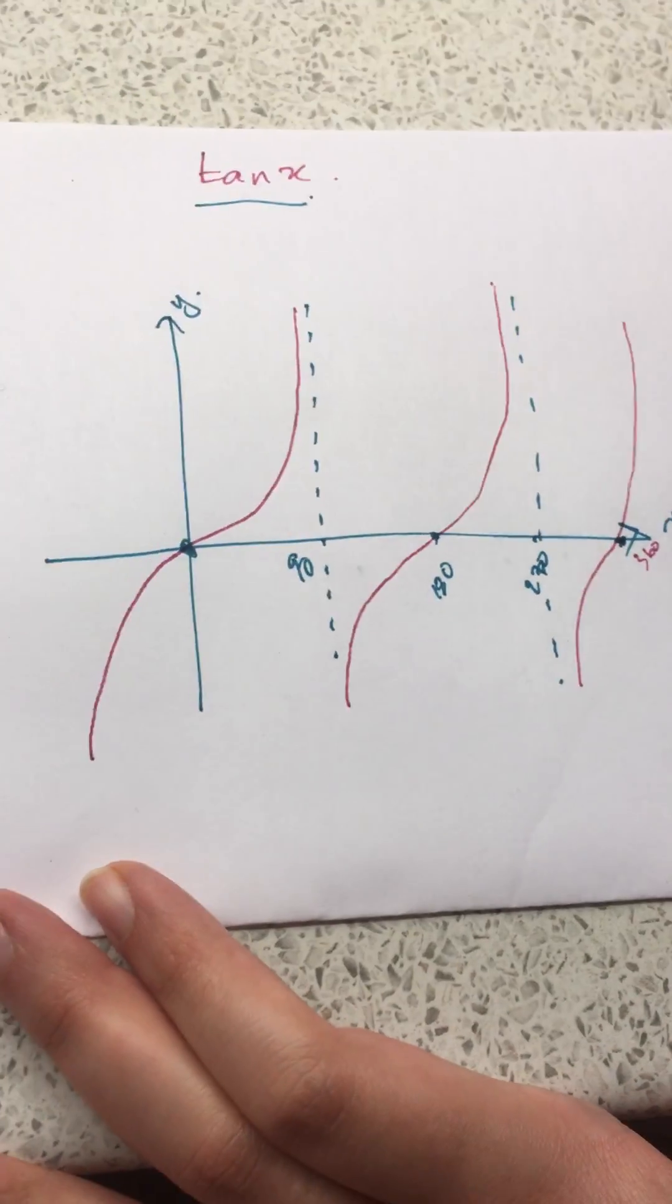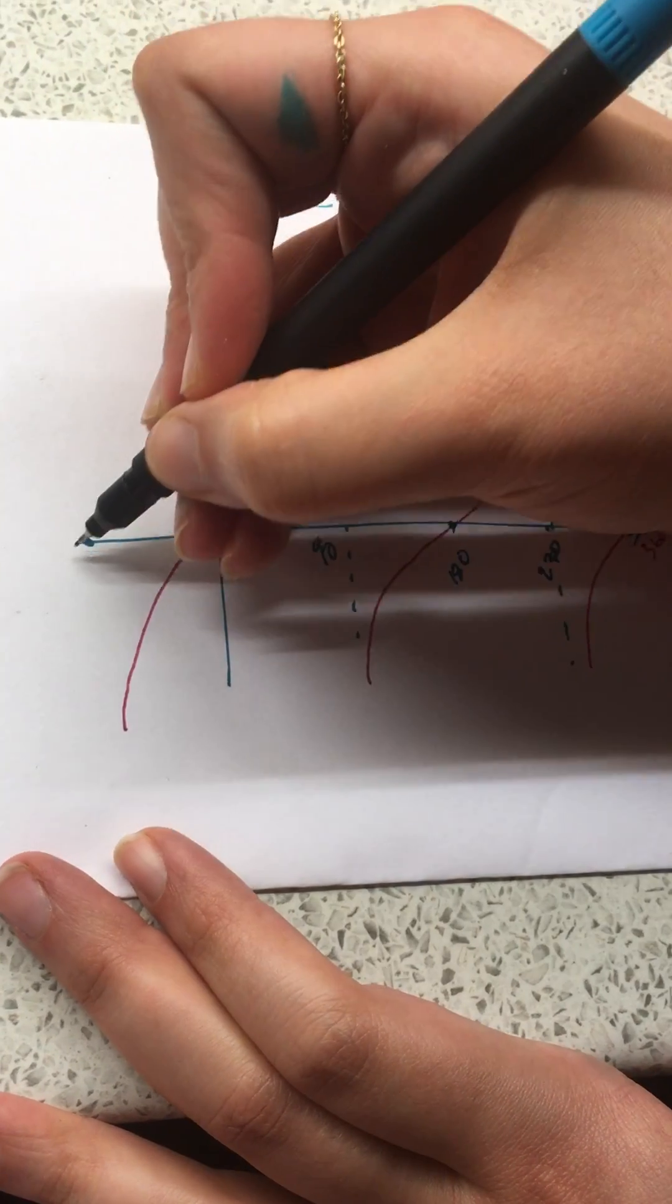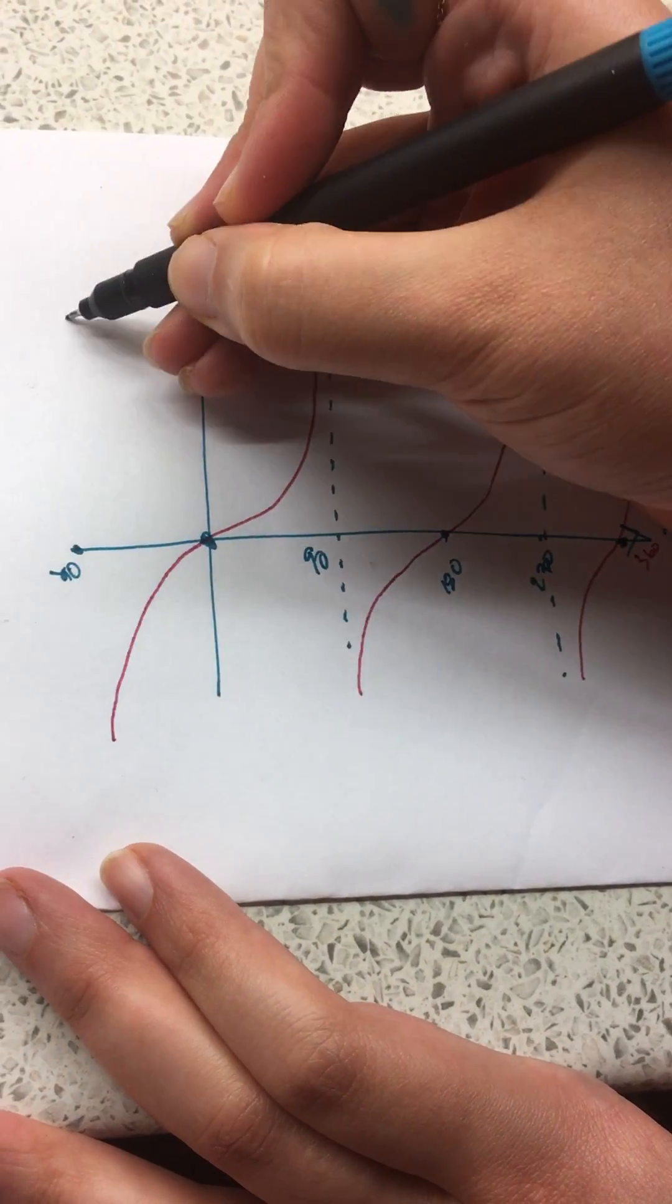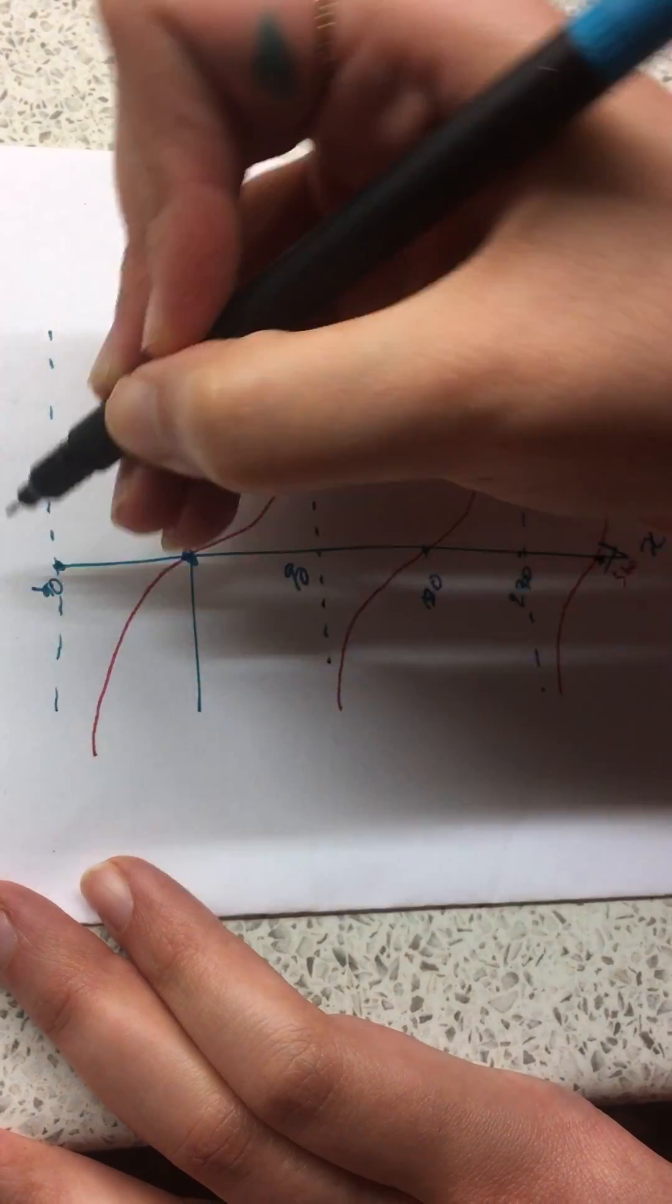And you also have on this side, that would be minus 90, again another asymptote.